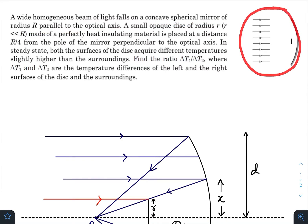As you can see in the diagram on the right, a small opaque disc of radius small r, which is very much less than capital R, made of perfectly heat insulating material is placed at a distance r by 4 from the pole of the mirror.